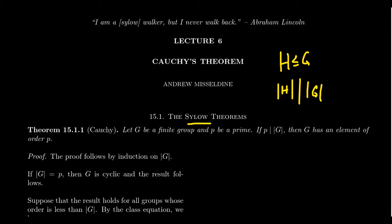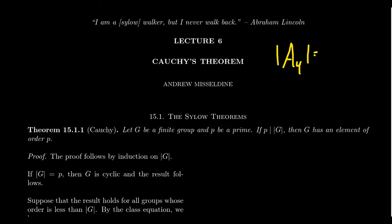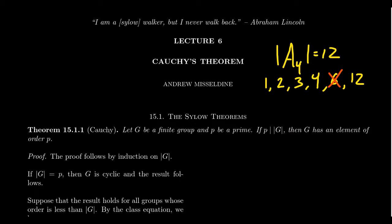It's tempting to hope for a converse to Lagrange's theorem — that for every divisor of the group order, there's a subgroup of that order. But that's actually not the case. You have groups like A4, the alternating group, whose order is 12. It does have subgroups of order 1, 2, 3, and 4, as well as 12 itself. But what about 6? Six divides 12, but A4 does not have a subgroup of order 6. Try as you might, you can't get one.